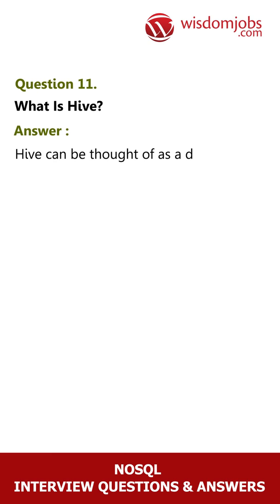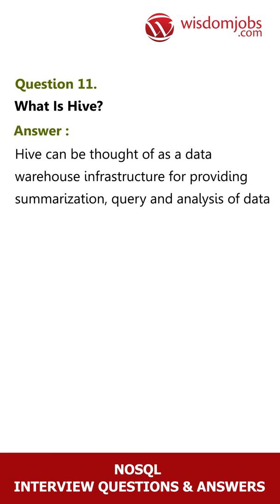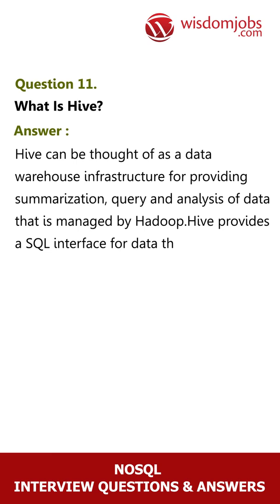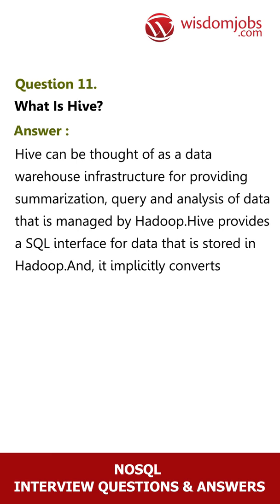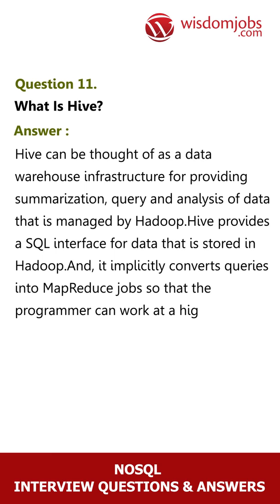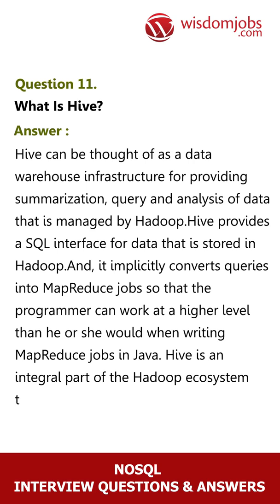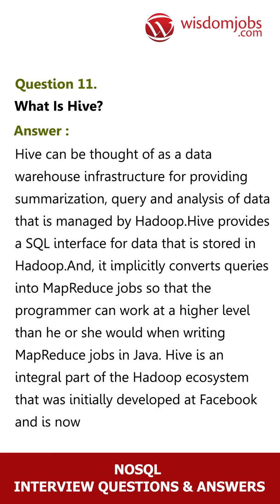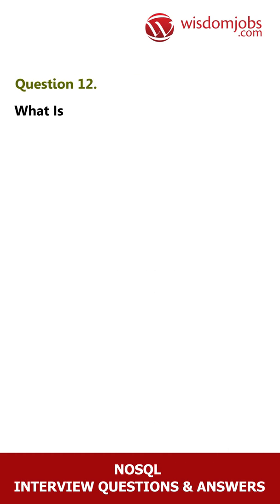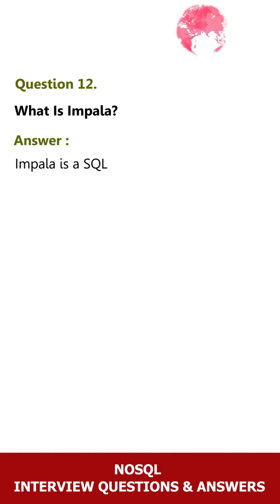Question 11: What is Hive? Answer: Hive can be thought of as a data warehouse infrastructure for providing summarization, query, and analysis of data that is managed by Hadoop. Hive provides a SQL interface for data stored in Hadoop and implicitly converts queries into MapReduce jobs so that the programmer can work at a higher level than when writing MapReduce jobs in Java. Hive is an integral part of the Hadoop ecosystem that was initially developed at Facebook and is now an active Apache open source project.